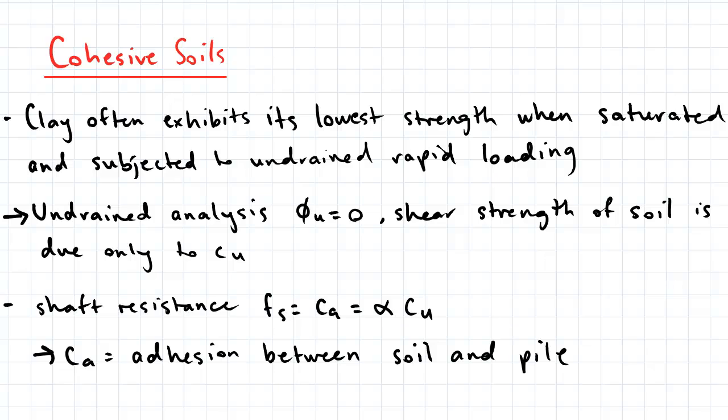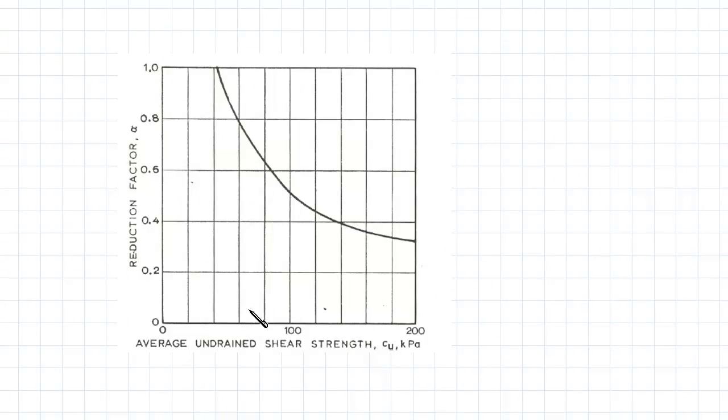The shaft resistance FS is equal to CA which is equal to alpha multiplied by CU. CA is the adhesion between the soil and the pile. So once you know CU, you can then...